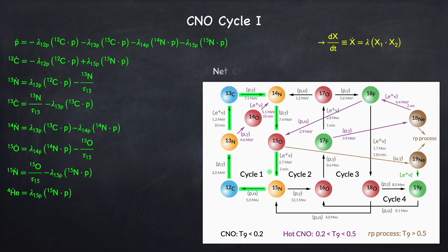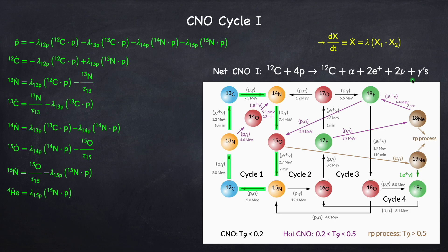The net process for this loop is: we've taken carbon-12 plus four protons and converted that into carbon-12 plus an alpha, plus two positrons, plus two neutrinos, plus some energy. Photon number is not a conserved quantity, so it can be converted into other things. These positrons are also really just plus energy, because they're going to immediately run into electrons, the two will annihilate into two photons. The neutrinos are just lost energy, because they only interact through the weak force and basically just stream through the star without knowing the star's even there.